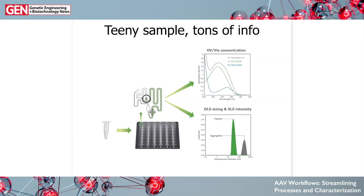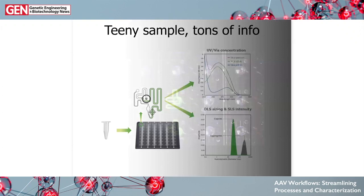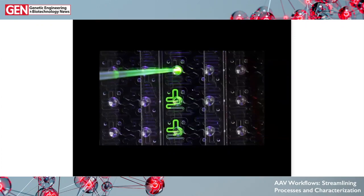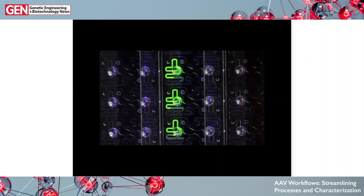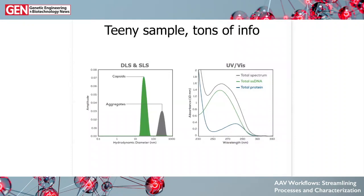Getting data from such a small sample volume starts with Stunner's consumable 96-well plate. Each well is a microfluidic circuit that lets you use just two microliters of sample to get information from two technologies: UV-Vis for concentration and DLS for sizing. SLS intensity data is also read during a DLS experiment. The plate can be used to read one sample or all the way up to 96 samples at a time. Stunner's AAV Quant application then combines those two pieces of powerful information into a full story about your AAV.